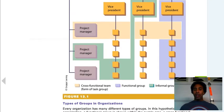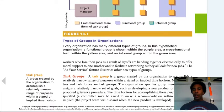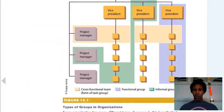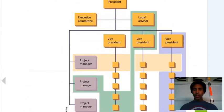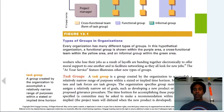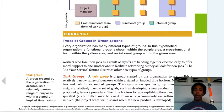There's a nice diagram here showing the types of groups in organizations. Every organization has many different types of groups. In this hypothetical organization, a functional group is shown within the purple area, a cross-functional team within the yellow area, and an informal group within the green area. A cross-functional team goes between different departments. If you work in an office, you see this all the time — people from different departments forming an informal group, going on walks together, going to lunch together. And then you also have people formed together as a formal group — the people on your actual work team.